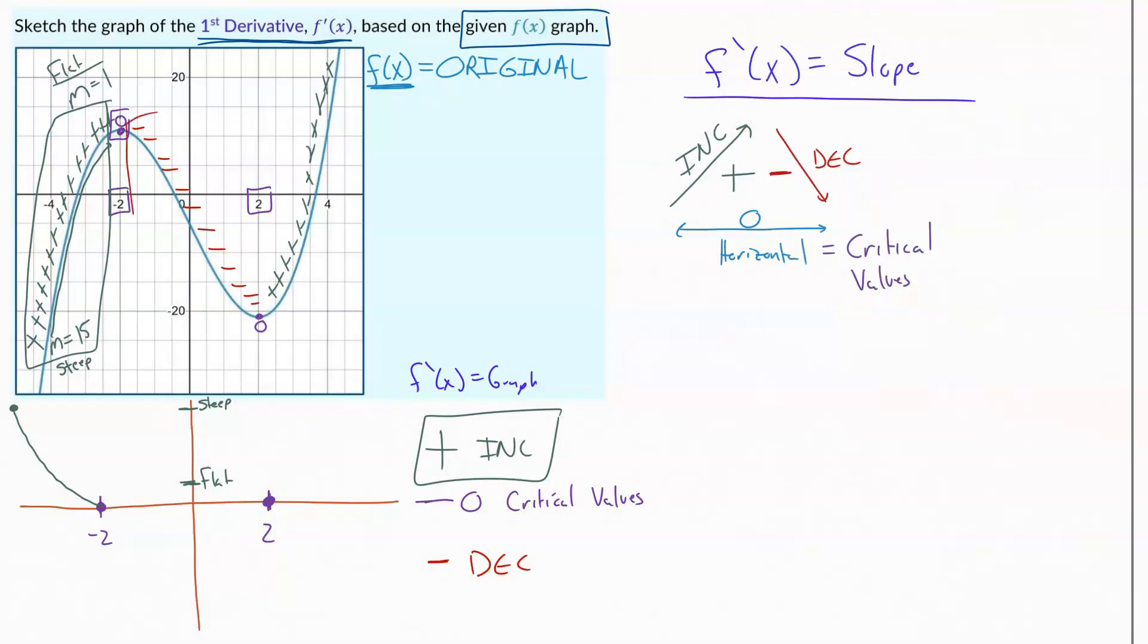Now we're going to play the same thing between our two zeros. This is all negative slopes. Those are all decreasing sections. So I'm going to go into the negative. This time I'm starting at an m equals 1. I'm starting somewhere flat, someplace close to zero.